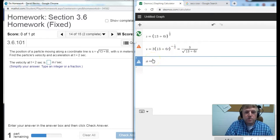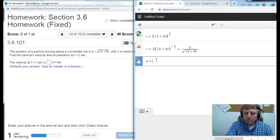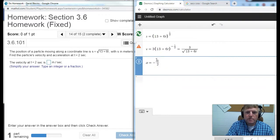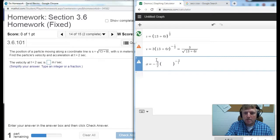Acceleration is derivative of velocity. So I'm going to multiply the old power times the old coefficient. So that's going to be a negative 3 halves. And then the power rule says subtract 1 from the exponent. The old exponent was negative 1 half. Negative 1 half minus 1 is negative 3 halves. Negative 1 and a half.